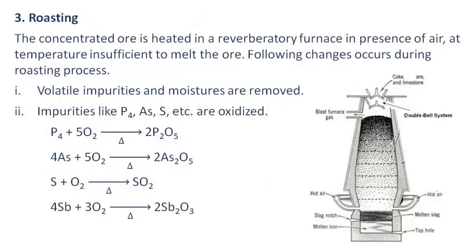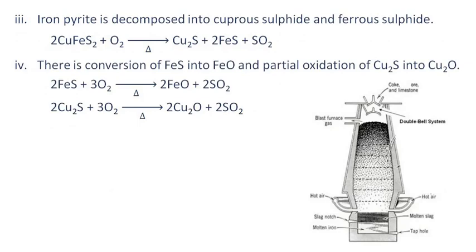Roasting: The concentrated ore is heated in a reverberatory furnace in presence of air at a temperature insufficient to melt the ore. Following changes occur during roasting: volatile impurities and moisture are removed; impurities like phosphorus, arsenic, sulfur, etc. are oxidized; iron pyrite is decomposed into cuprous sulfide and ferrous sulfide; there is conversion of iron sulfide into iron oxide and partial oxidation of cuprous sulfide into cuprous oxide.